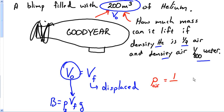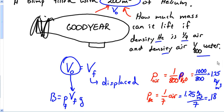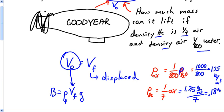The problem tells us the density of air is 1/800 the density of water, and the density of helium is 1/7 the density of air. Since the density of water is 1000 kg/m³, the density of air = 1000/800 = 1.25 kg/m³, and the density of helium = 1.25/7 ≈ 0.18 kg/m³. So we now have both densities.